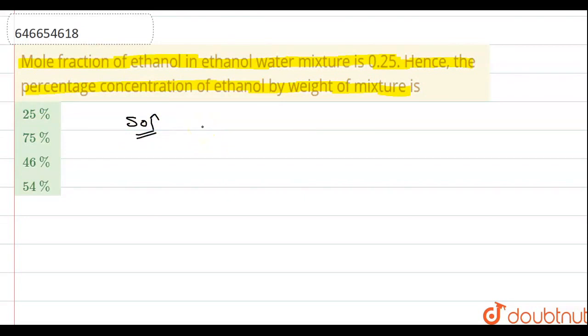Moles of ethanol and water are 0.25 and 0.75. So, let one mole of the mixture be present. The moles of ethanol and water will be 0.25 and moles of water, that is 0.75, and moles of ethanol, that is 0.25.